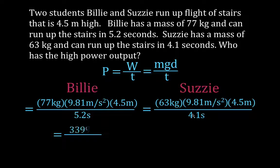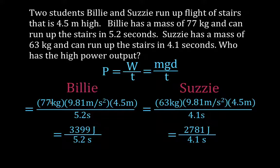We first calculate and compare the amount of work each of them does. You can see that Billy, because he has more mass, does more work. Susie has a lower mass and she's raising that mass up over the same distance of 4.5 meters, so she does less work. Billy does 3,399 joules of work when he lifts his body up. Susie does 2,781 joules of work when she lifts her body up.